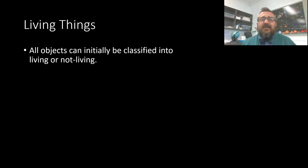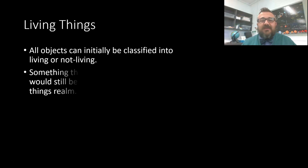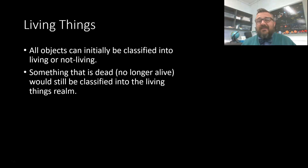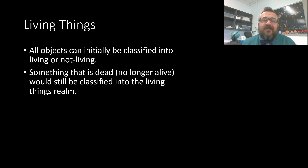When talking about classification or taxonomy, we like to break things into smaller and smaller groups. If we look at all the objects on Earth and in the universe, we can break them into two categories: living or not living. Remember that something which is dead — no longer alive — we'd still put into the living things realm, because a cat that was run over is still a cat and still fits into the same categories.